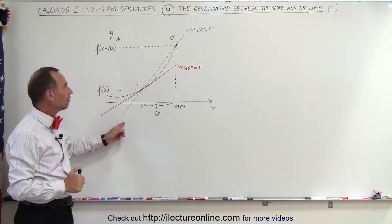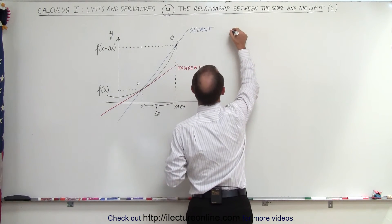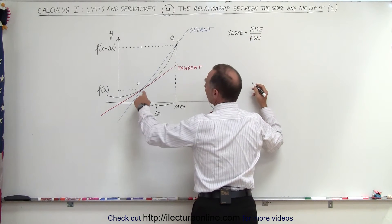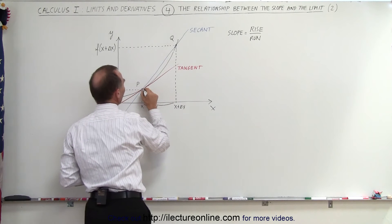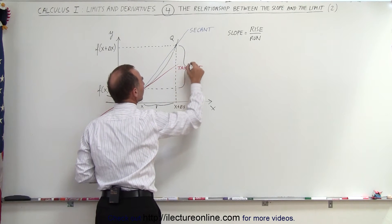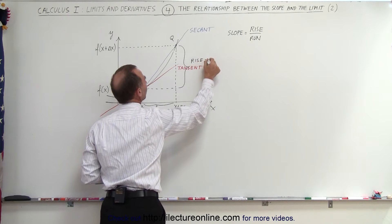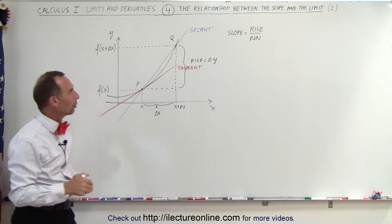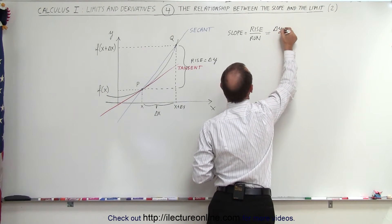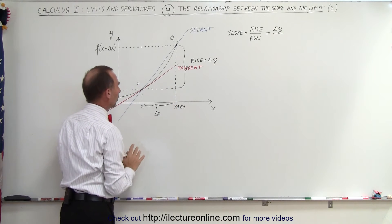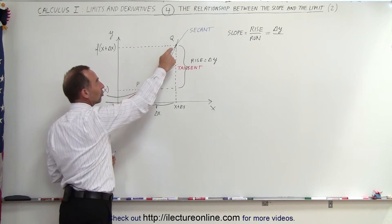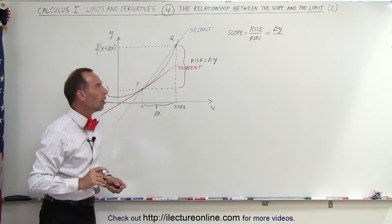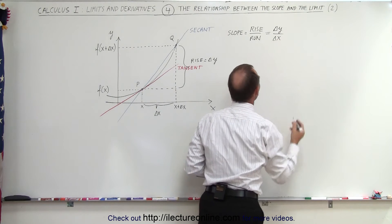Let's find an expression that defines the slope of the secant line. The slope of the secant line, by definition, is equal to the ratio of the rise divided by the run when going from point P to point Q. The rise is defined by the change in y values between point Q and point P, and the run is the change in x. The x coordinate of point P is simply x, and the x coordinate of Q is x plus some small change in x — we call it delta x.